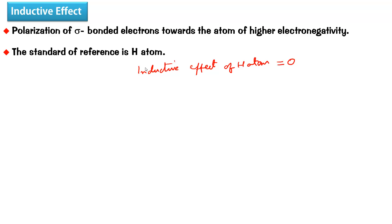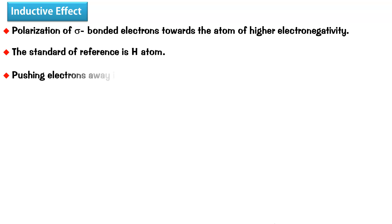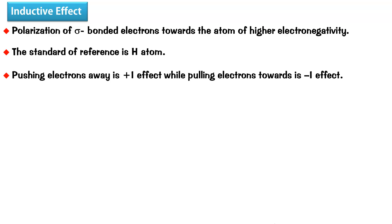Inductive effect is of two types: one involves pushing electrons away from an atom or group, and the other involves pulling electrons towards it. Pushing electrons away is called plus I effect, while pulling electrons towards is minus I effect. This is always measured with respect to hydrogen. If an atom or group pushes electrons away compared to hydrogen, it is plus I; if it pulls electrons towards itself compared to hydrogen, it is minus I.